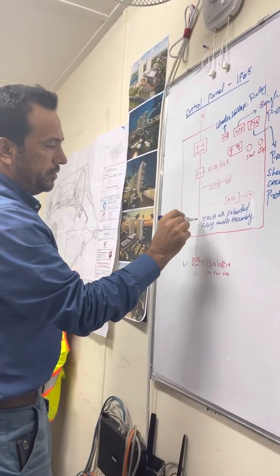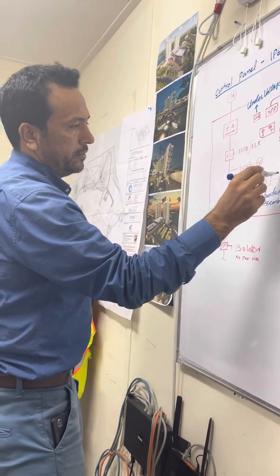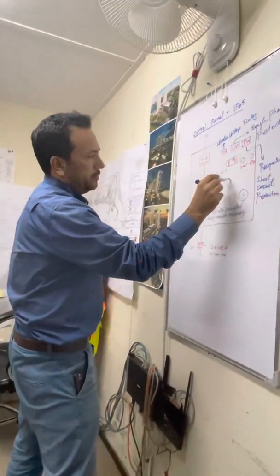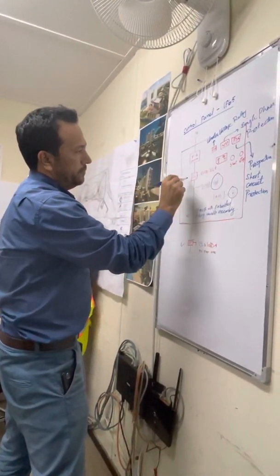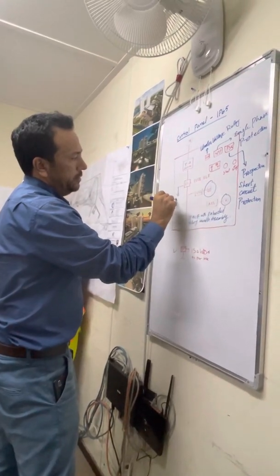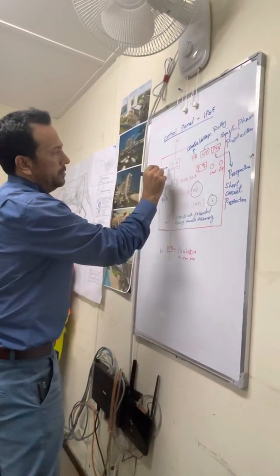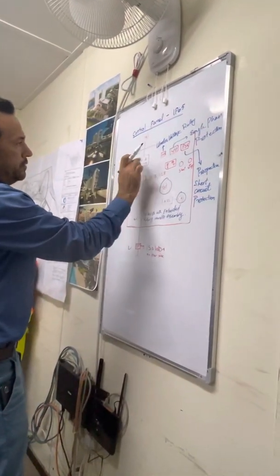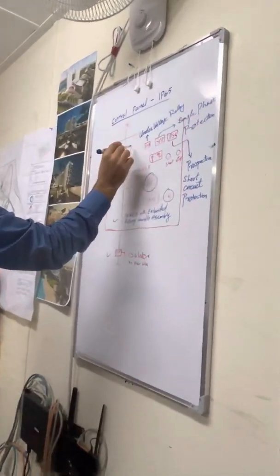Isolator, MCCB, Selector Switch for Ampere, Selector Switch for Voltage, ENCB or RCD, then Star Delta Conversion or VFD.